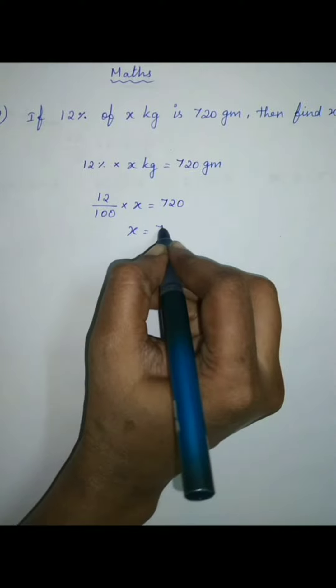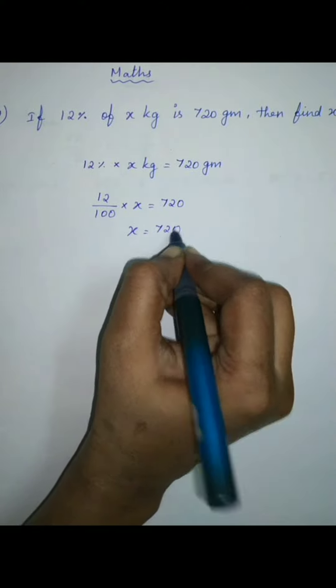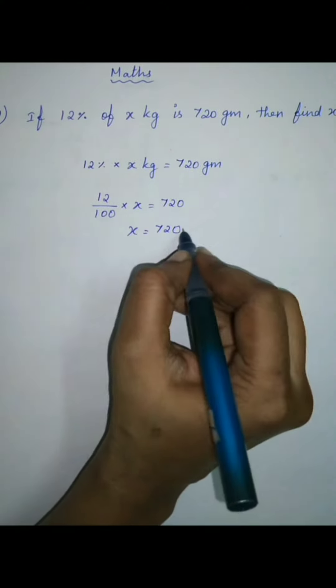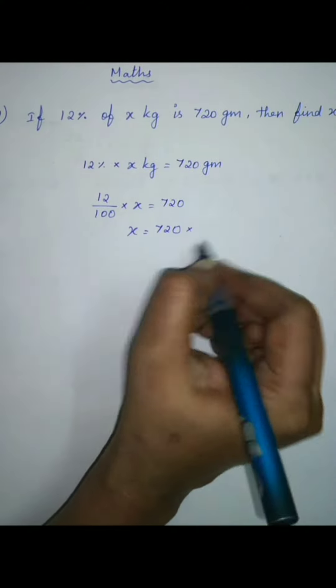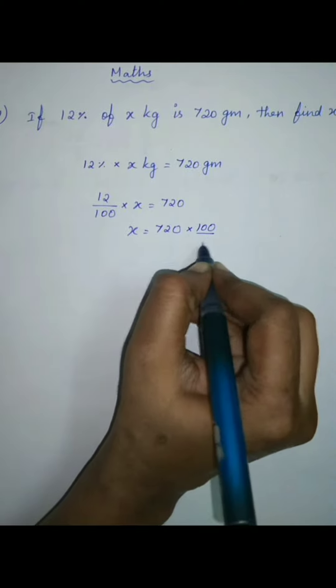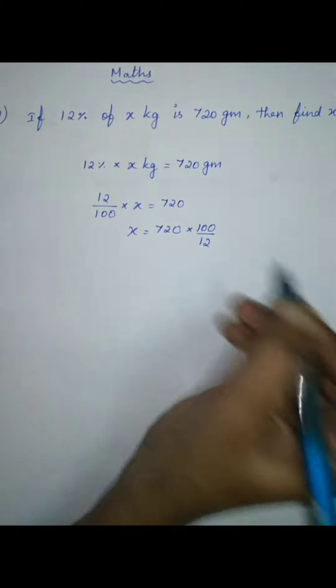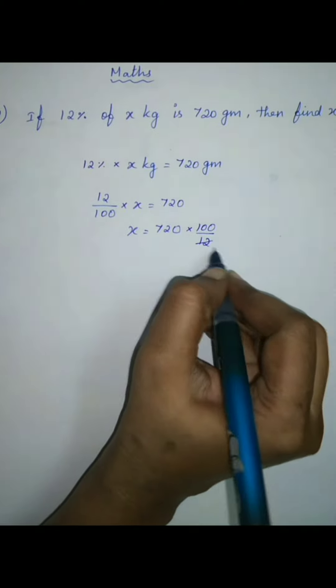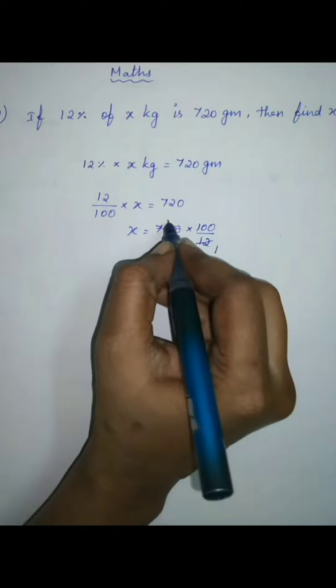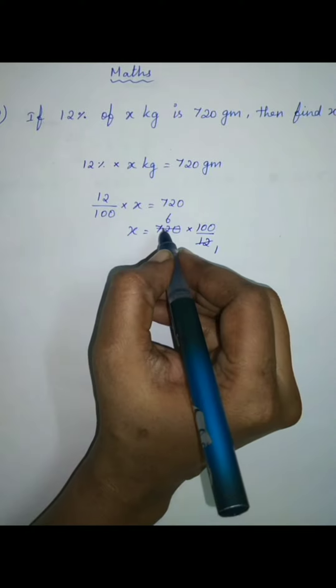x equals 720, and on the other side take the reciprocal. So, 100 by 12. 12 into 12 is 12, 6 into 12 is 72.